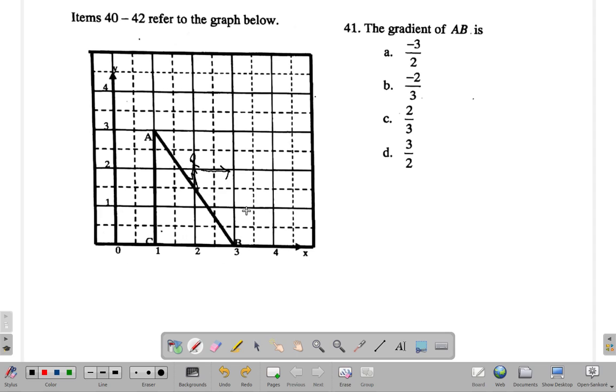have a negative gradient. If you're going up, if the line was like this, you'd have a positive gradient. But since you're going down you have a negative gradient, so you can see that C and D are out.